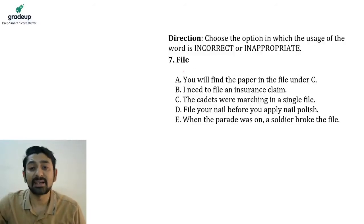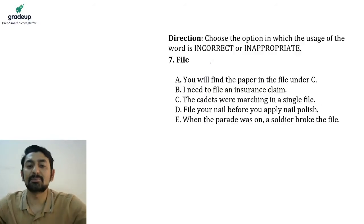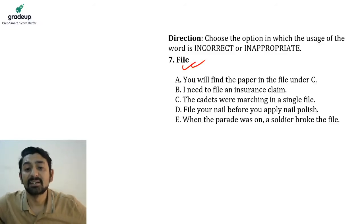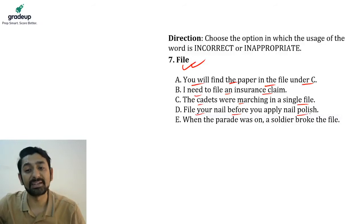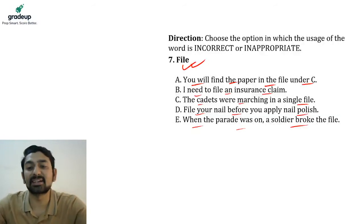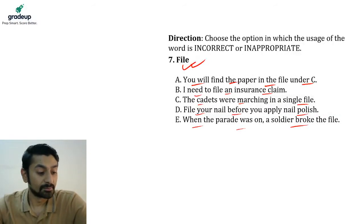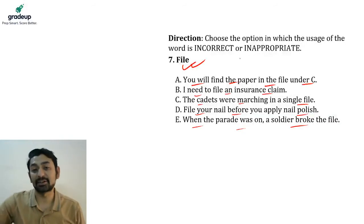Question seven — the word is 'file.' Which option is incorrect or inappropriate? Option A: You will find the paper in the file under C. Option B: I need to file an insurance claim. Option C: The cadets were marching in a single file. Option D: File your nail before you apply nail polish. Option E: When the parade was on, a soldier broke the file. Which is incorrect?